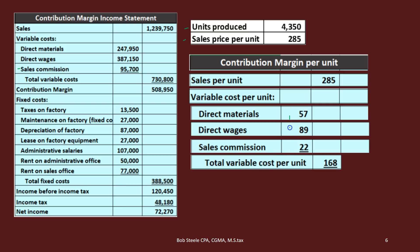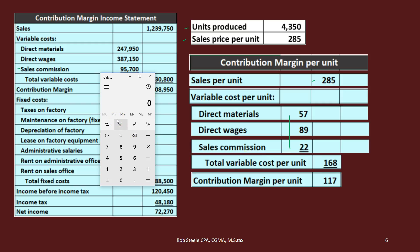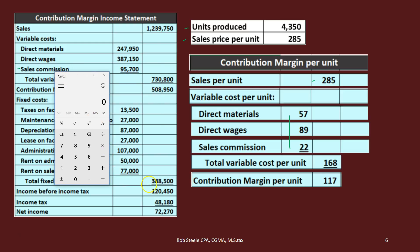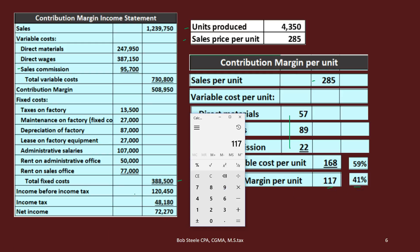Adding up the variable costs per unit gives us the total variable cost per unit. Sales price $285 minus variable cost per unit gives us the contribution margin per unit of $117. This tells us how much we walk away with per unit after covering variable costs. For break-even, divide fixed costs of $388,500 by $117 = 3,320 units needed to break even. The contribution margin percent is $117 ÷ $285 = approximately 41%.